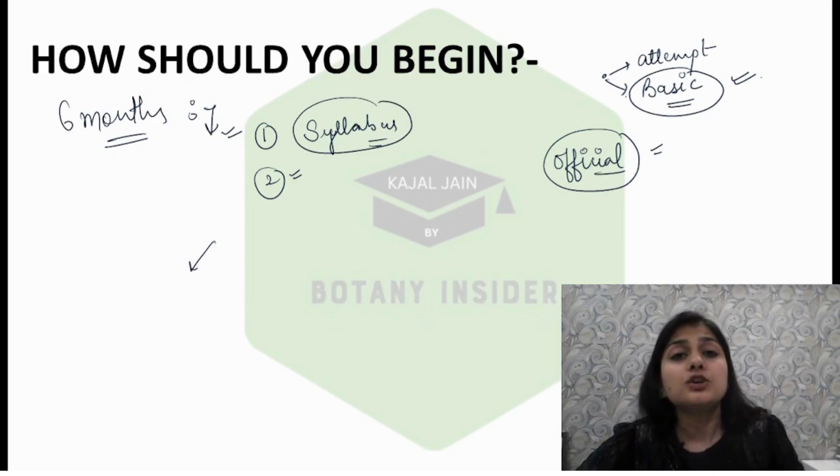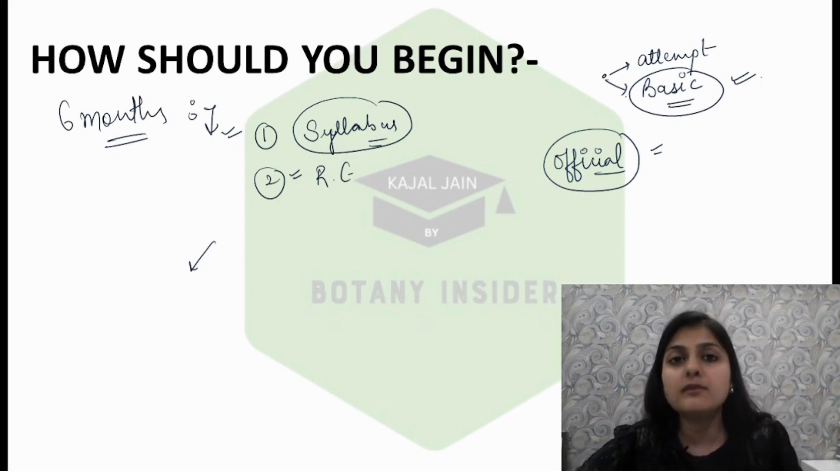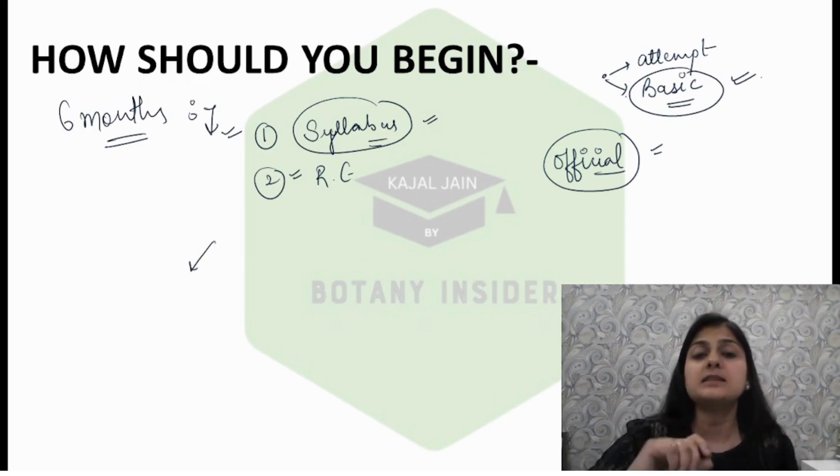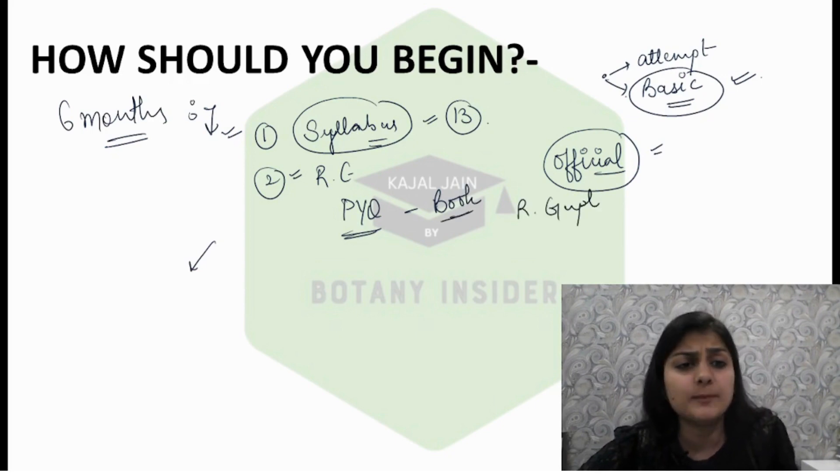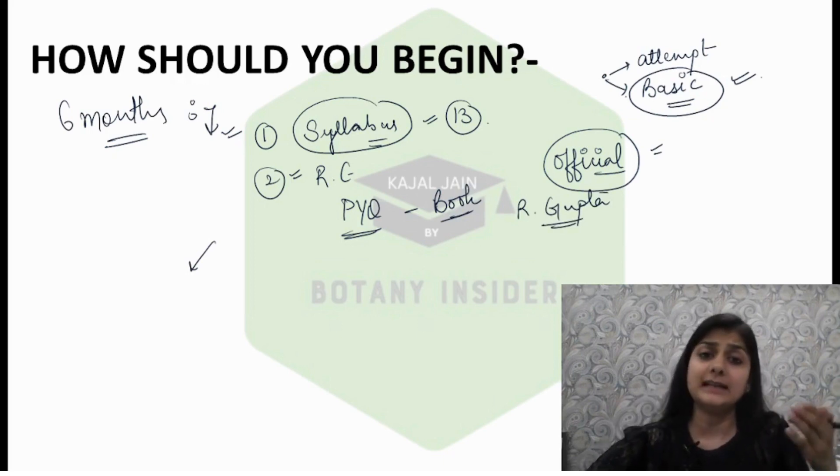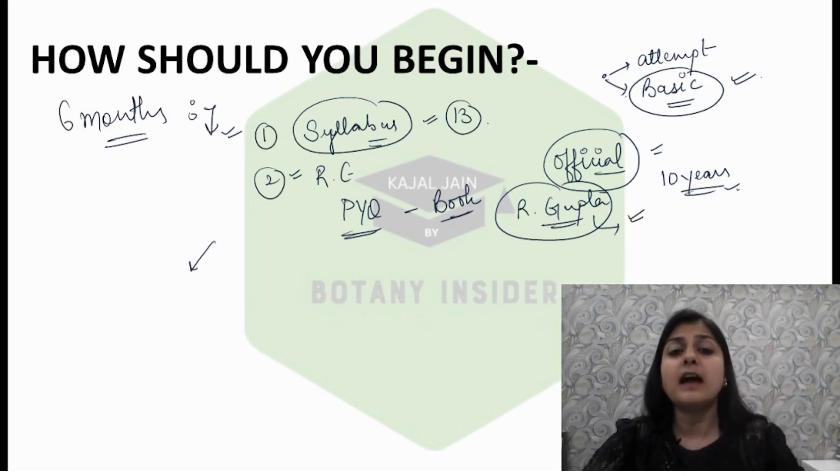In addition to your syllabus, you should have previous year questions. At the beginning of your preparation, you should always have these 2 prerequisites: complete 13 units syllabus in printed copy, and previous year questions. I followed R Gupta. You can take any book that has at least the previous 10 year papers. You can find it easily on Amazon or Flipkart.